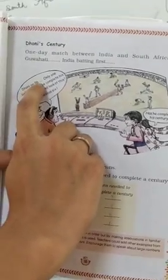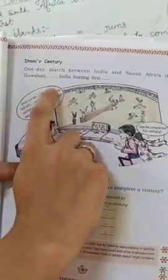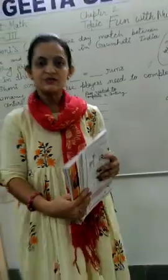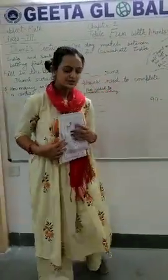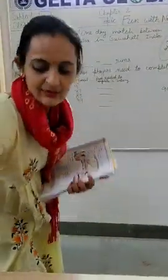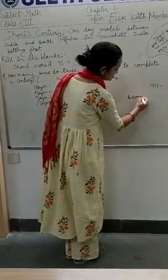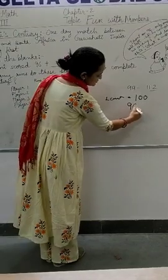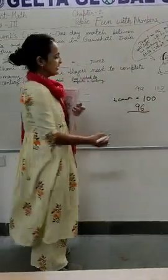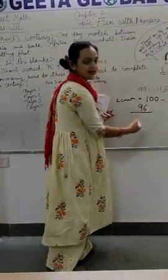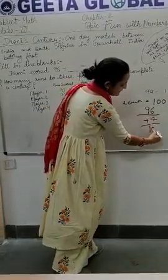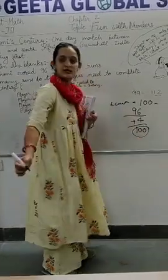Dhoni के कितने runs बन चुके हैं? 96. One ball left. तो क्या वो अपनी century पूरी कर पाएगा? Century क्या होती है? Century होती है जिसमें 100 runs होते हैं। एक century में कितने runs होते हैं? One hundred. उसके पास कितने runs बन चुके हैं? 96. That means to complete 100, we need four more runs.